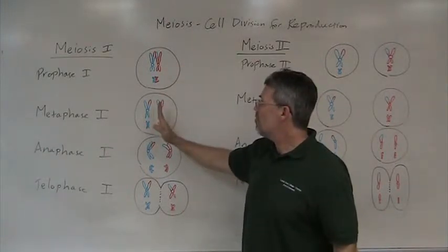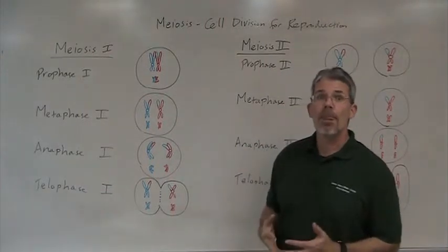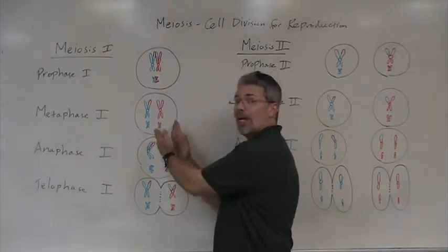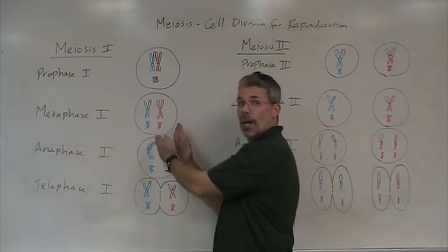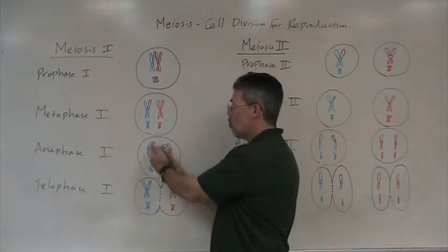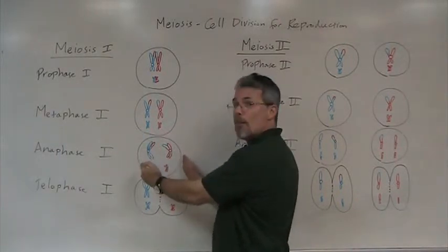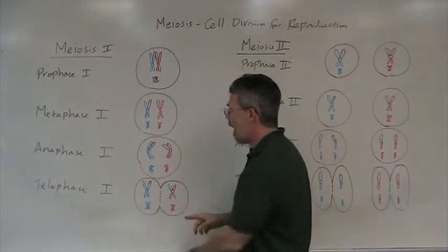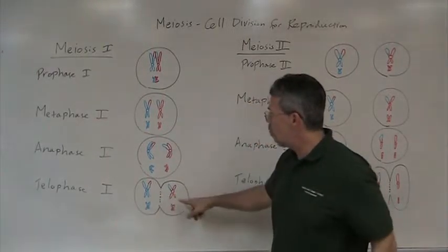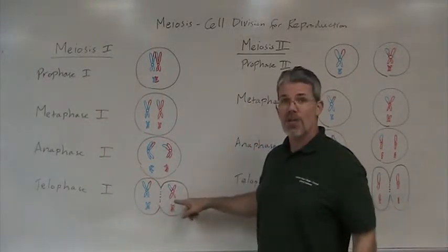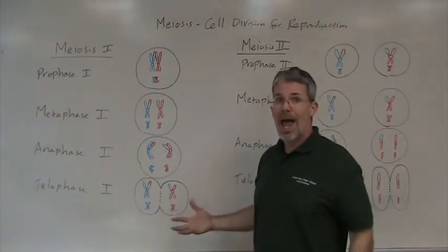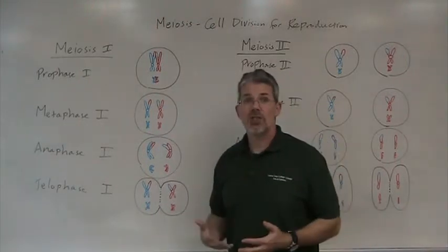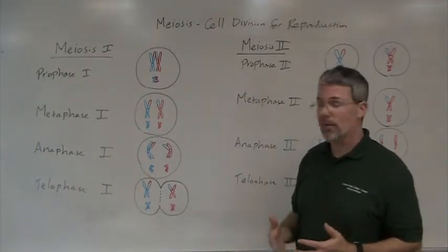With metaphase I, it's different from mitosis because this time they're lining up in homologous pairs. And in anaphase I, it's the homologous pairs that get separated, and therefore after telophase I, we've got two cells which are now haploid. So meiosis I is the division that goes from diploid to haploid.